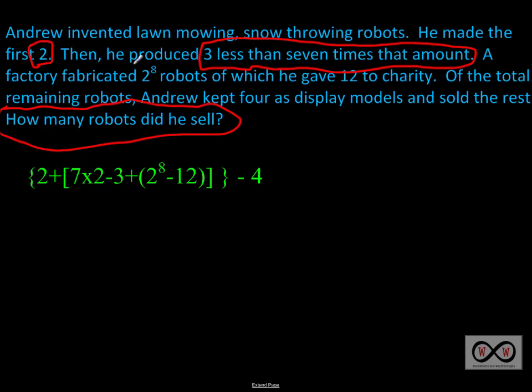So let's see how that relates to this problem. Originally, he made two robots. Then, he made seven times that original amount minus three. So that was three less than seven times the original amount. A factory fabricated 2 elevated or 2 to the 8th power robots, of which he gave 12 to charity. So the factory made 2 to the 8th power robots. And he gave 12 to charity. So if you look down in the expression, there it is. It's represented right here within these parentheses. We got 2 elevated to 8th power, which is the number that the factory fabricated. And he gave 12 of those to charity. So we subtracted 12 from that amount that was produced by the factory.